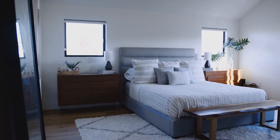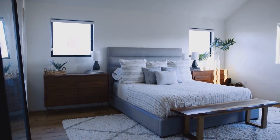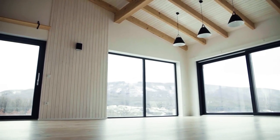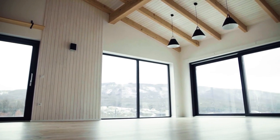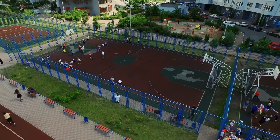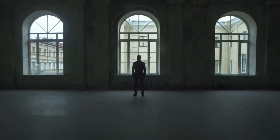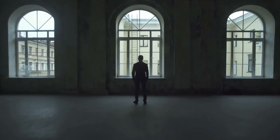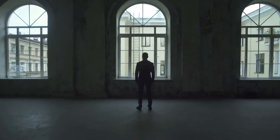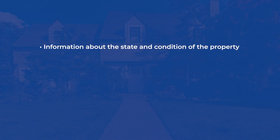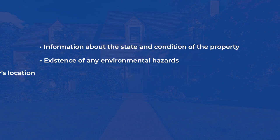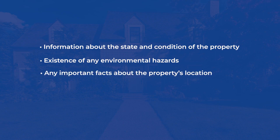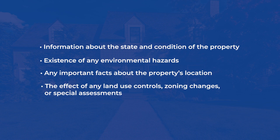Usable area comprises only the areas actually used by a tenant. Rentable area includes usable area, but also adds any portion of the communal areas that also belong to the tenant. There are other pieces of information about a property that should be divulged to potential buyers or tenants, including factors like the state and condition of the property, existence of any environmental hazards, any important facts about the property's location, or the effect of any land use controls, zoning changes, or special assessments.